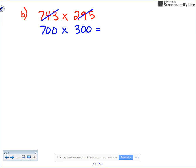Even though we rounded one down and one up, because we rounded 743 down dramatically—a 43 number drop as opposed to five—our number is still going to be a little bit higher than our estimate, which is seven times three is 21, four zeros. Our estimate is 210,000 and you'll see that our number is a little bit higher than that.